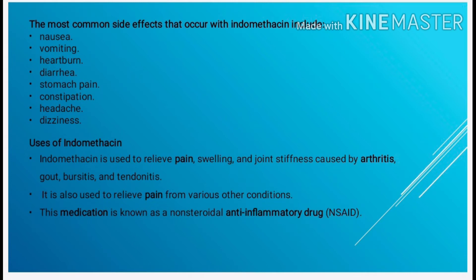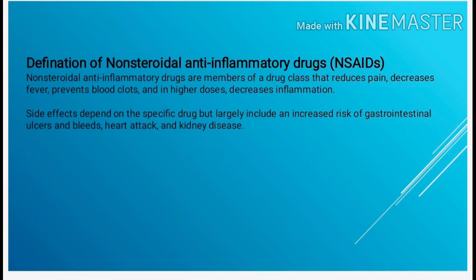The most commonly prescribed NSAID drugs include diclofenac, ibuprofen, naproxen, and celecoxib. Most of the NSAIDs listed are generic medicines, meaning their production and distribution is not limited to a single company. Two NSAIDs are available over the counter — that is OTC — without a need for a prescription; an example is ibuprofen.